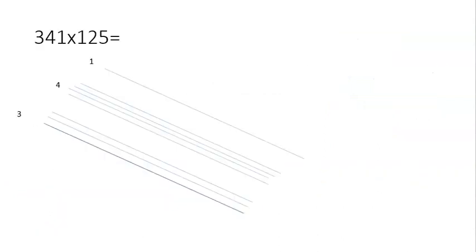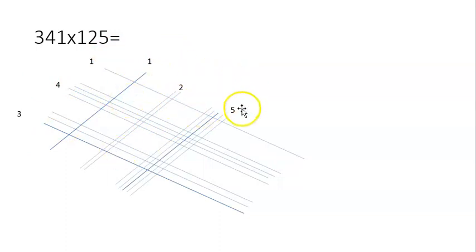Now let's look at how we can do this with larger numbers, like three-digit numbers. Let's look at 341×125. As usual, our first step is to draw the first number's diagonal lines: the three, then the four, then the one. The second step is to do it in the opposite direction for the second number: the one, then the two lines, then the five.